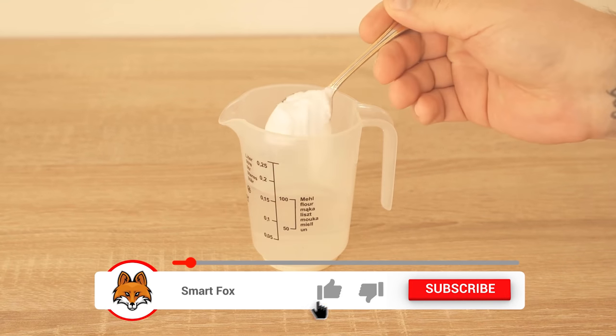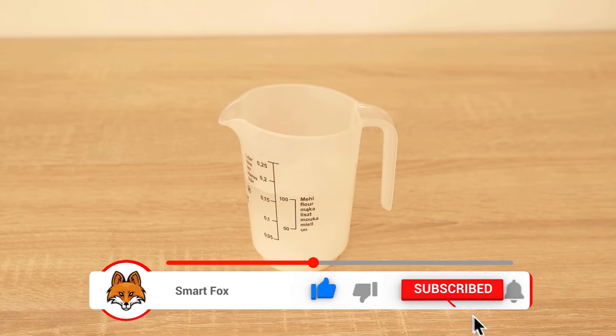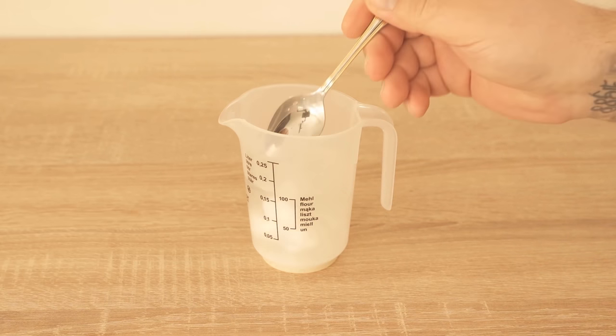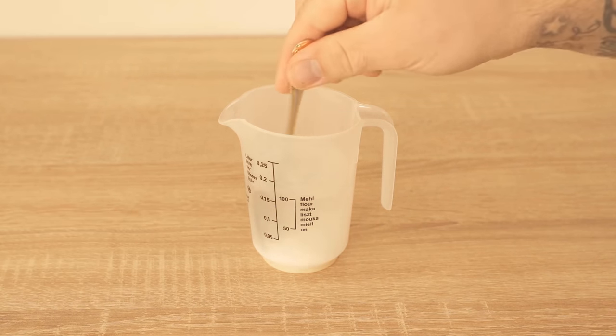We now need about 2 teaspoons of baking soda, which we add to our 100ml of water. Now we stir the whole thing properly and we have a fabric softener alternative.